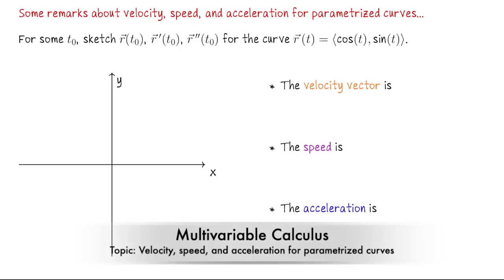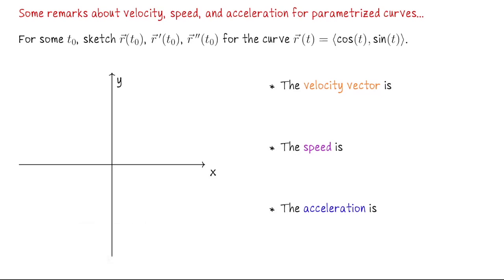In this lecture we're going to talk a little bit more about the kinds of information we get out of a parametrization, its first derivative, and also its second derivative. We haven't seen that yet, but we'll take a look at the second derivative, r double prime, in this lesson.